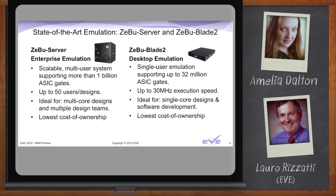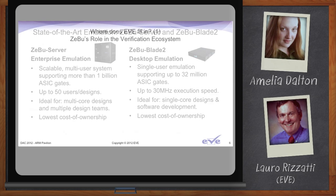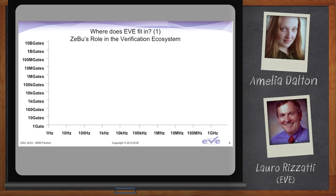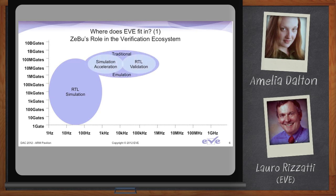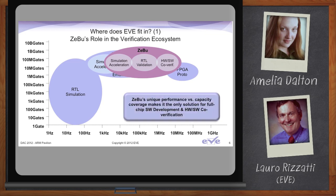A verification engineer has a lot of tools in their toolbox. Let me use a visual slide mapping speed of execution against design capacity. The simulator sits on the bottom left corner, reaching perhaps 100 million gates and maybe a kilohertz or a few kilohertz of speed. Traditional, or big-box, emulators have higher capacity and higher performance, maybe a megahertz at the top. FPGA prototyping goes all the way to possibly 100 megahertz, typically 20 to 30. Our fast Zeebo emulators sit in between the big-box emulator and FPGA prototyping.